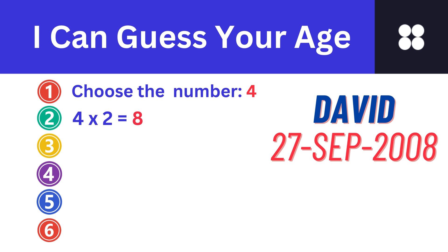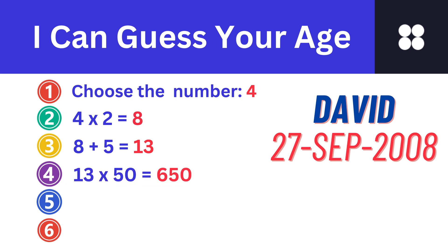Multiply the given number by 2. Let's multiply the number 4 by 2 and we get 8. Step 3: Add 5 to the answer. Let's add 5 to the number 8 and we get 13. Step 4: Multiply that number by 50. Let's multiply the number 13 by 50 and now we get 650.